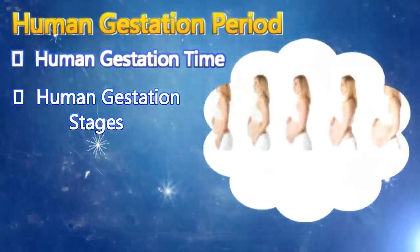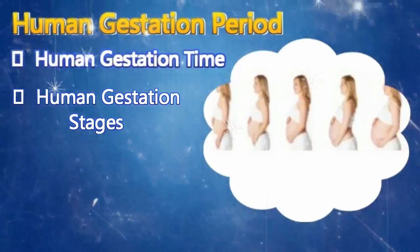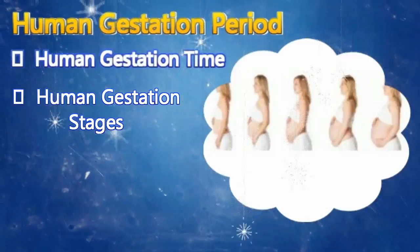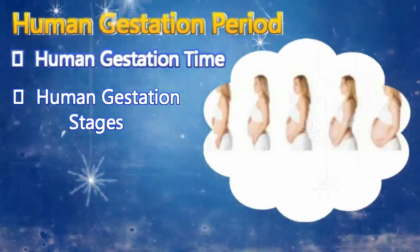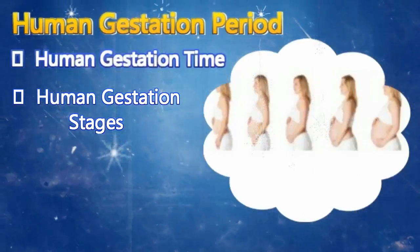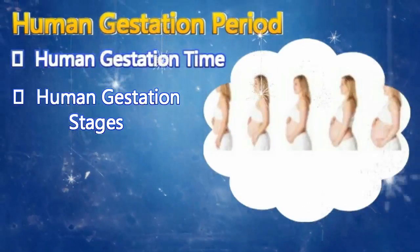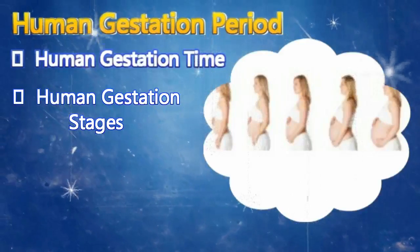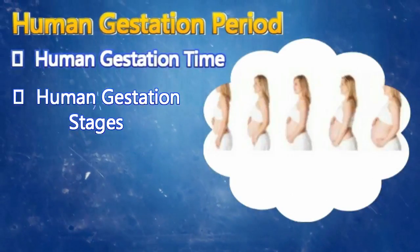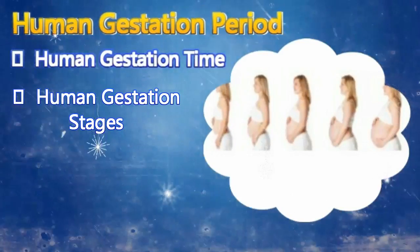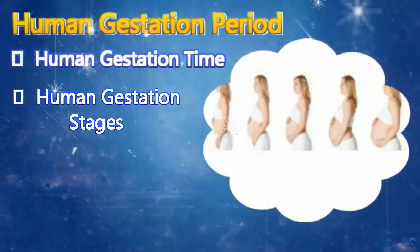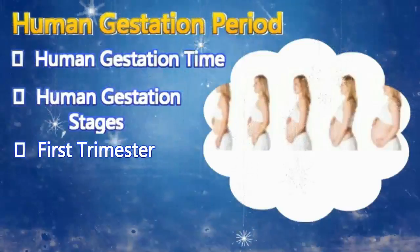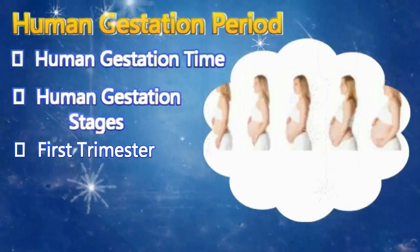The 40 weeks of pregnancy are divided into three stages of development: namely, the first trimester, the second trimester, and the third trimester. To understand the gestation period for humans, it is also important to know the stages that a woman undergoes during maternity.